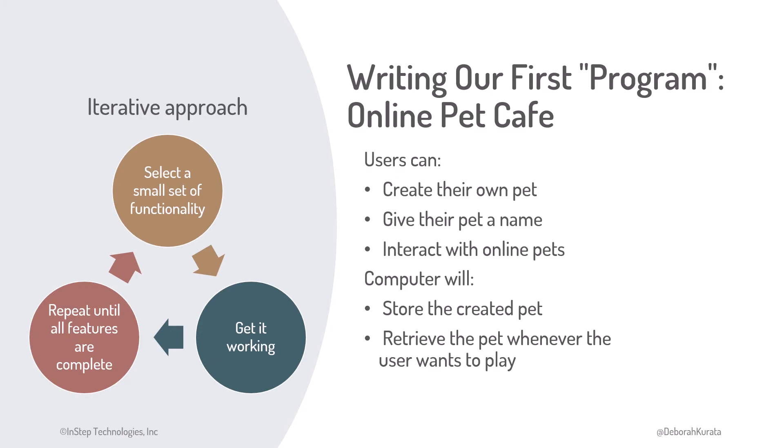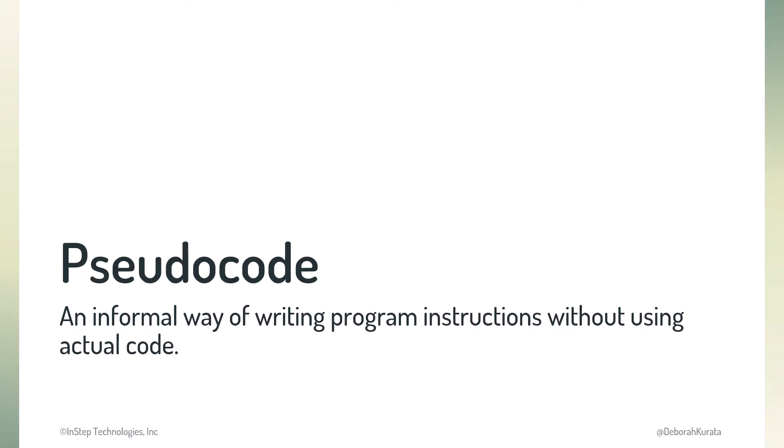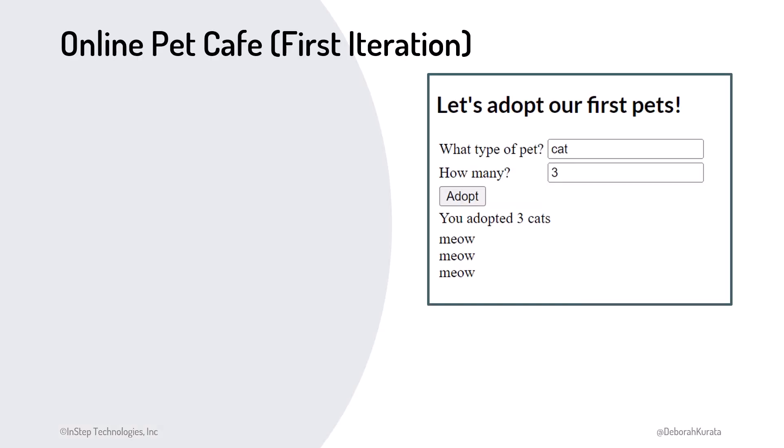We'll use a form of pseudocode to write those instructions. Pseudocode is an informal way of writing program instructions without using actual code. We'll use actual code in the Gentle Introduction to JavaScript for Beginners course, but for now we want to focus on how to think about programming, not about a specific programming language or syntax.